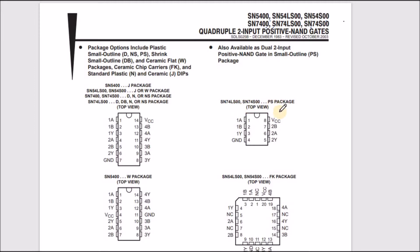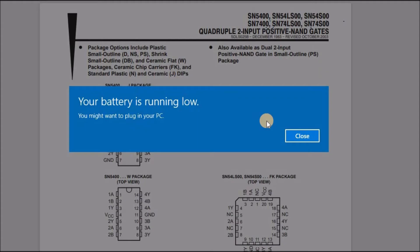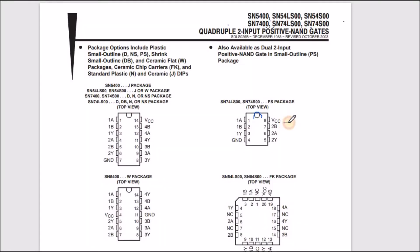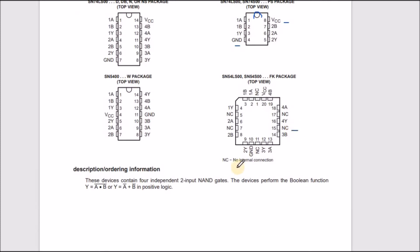This notch or hole identifies the orientation of the IC. To the left of this hole, we have pin number one, then counting down — two, three, four, and so on. After this side ends, we continue counting from the other side. We also have VCC, which is the high voltage supply — usually 5 volts — and GND, which is zero voltage. NC means no internal connection, so there is no wire at that pin.